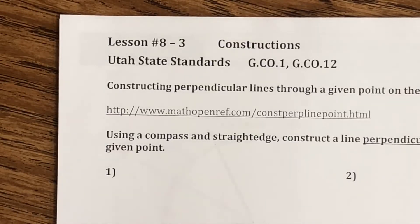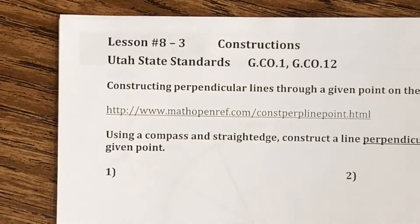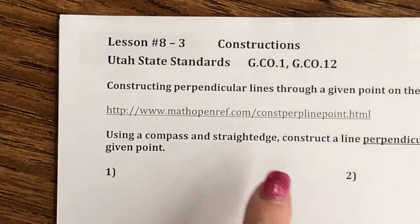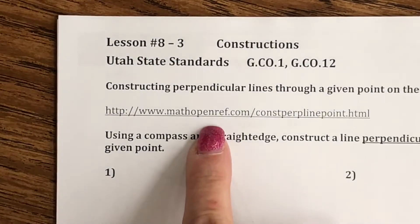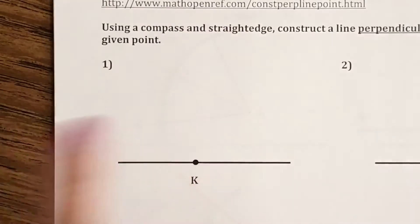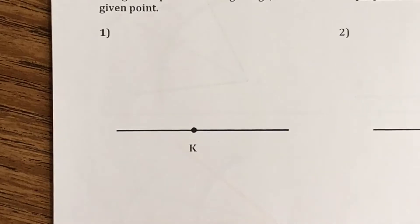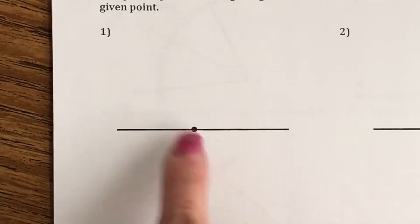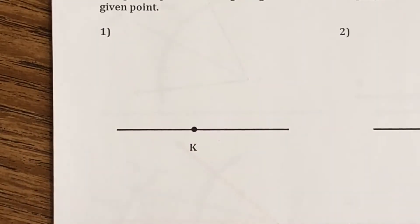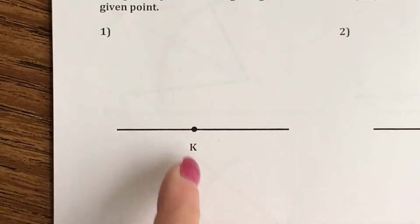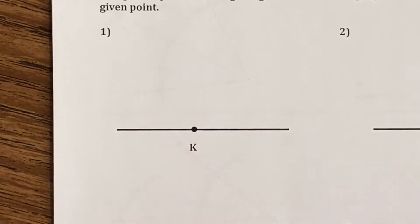This is the video lesson for number 8-3 constructions. We are going to learn how to construct a perpendicular line through a given point on a line. If you need more help there are videos to help you. We're going to use a compass and a straightedge. We're going to construct a line that's perpendicular to this line through the given point.